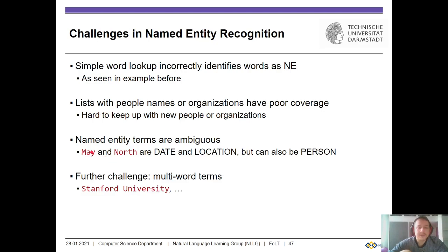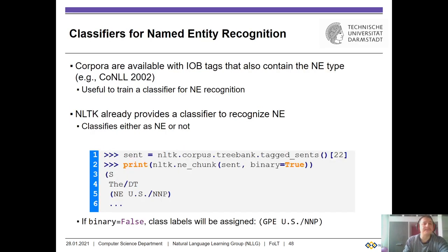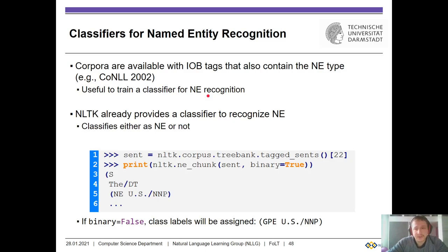Named entities are furthermore ambiguous. For example, 'May' and 'North' might initially be identified as a state or location, but they could also be person names. There are also multi-word expressions like Stanford University or Google Incorporated. So basically, what we would do is use corpora available with BIO tags that also contain the named entity type — for example, contained in CoNLL 2002. We can train the same classifier as before with the same features, since it's more or less the same problem as NP-chunking from a machine learning perspective, and reuse the previous architecture.